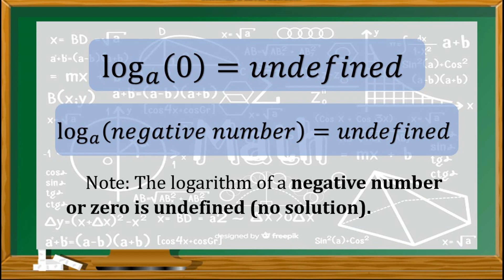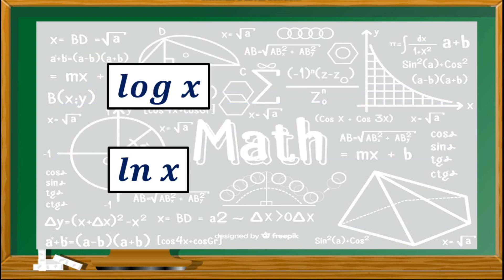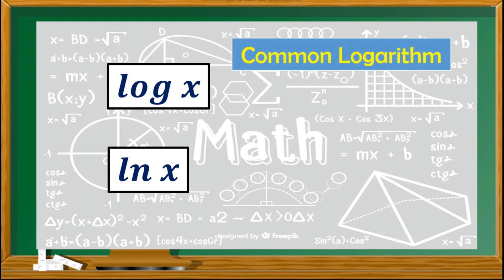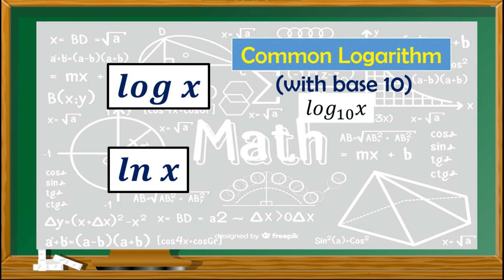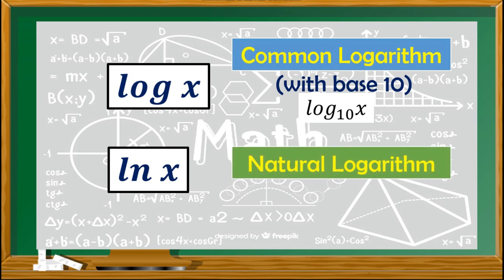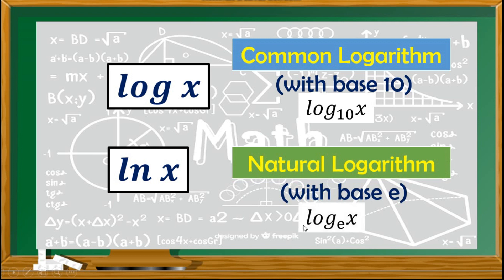There are two types of logarithms. We have the common logarithm, written as log x, where the base is 10. If there is no base indicated, the base is automatically equal to 10. Then there is the natural logarithm, written as ln x, where the base is e. This is a shortcut for writing logarithm of x with base e.